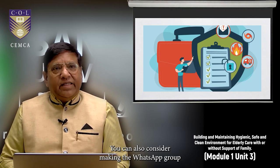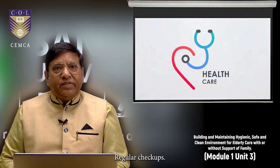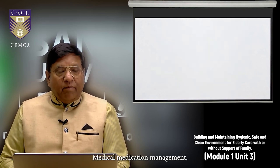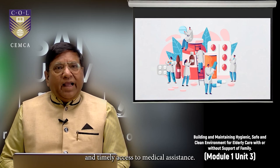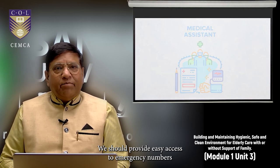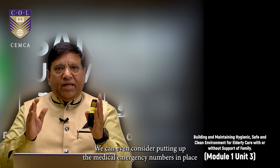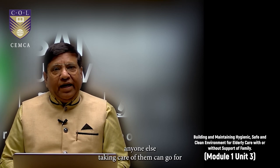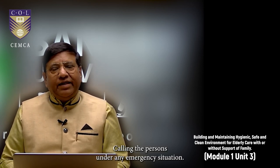This emergency plan which is in place can include contact information for emergency services and the names and numbers of those family members who are there to be contacted in case of any emergency. Their numbers can be in the fast dialing mode. Sometimes you can also consider making the WhatsApp group of the concerned persons. Healthcare, regular checkups. We should schedule regular medical checkups and follow up with healthcare providers. Medication management. We should have a chart for giving them medicines properly and timely. Access to medical assistance. We should provide easy access to emergency numbers and medical assistance devices like medical alert systems.